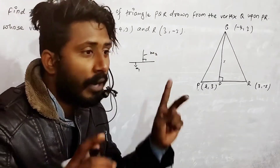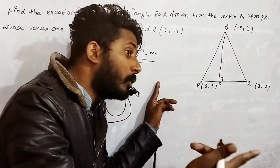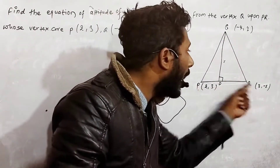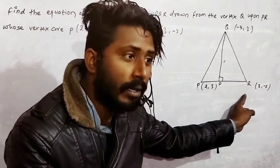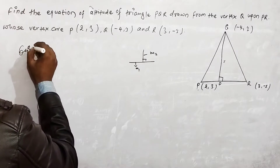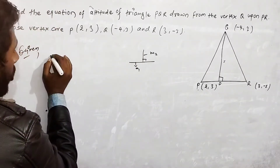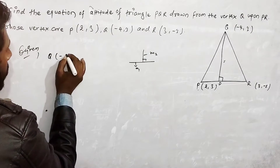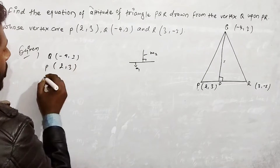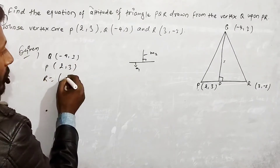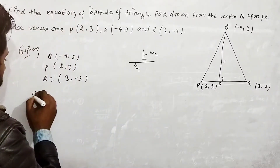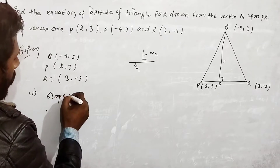Since QD is perpendicular to PR, we use the condition for perpendicular lines. First, we find the slope of PR. The slope formula is (y2 - y1) / (x2 - x1), where P is (2, 3) and R is (3, 1).